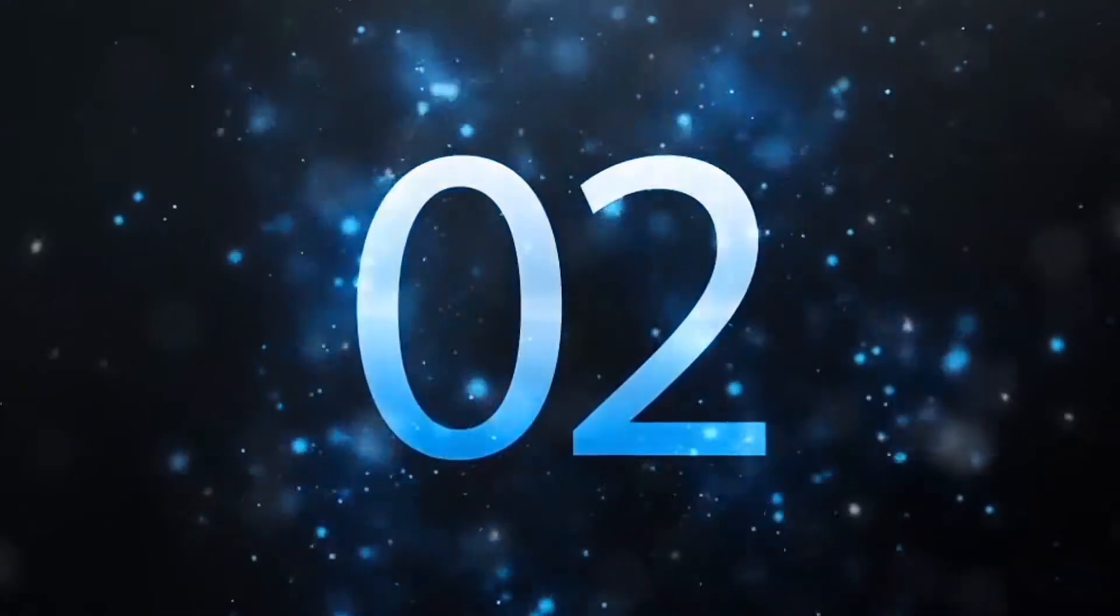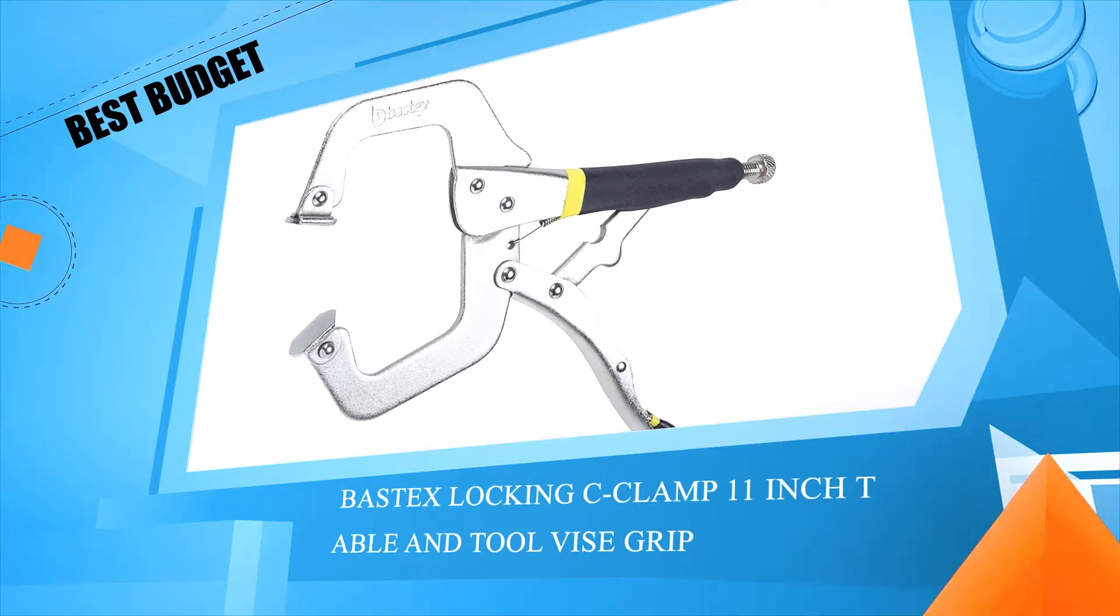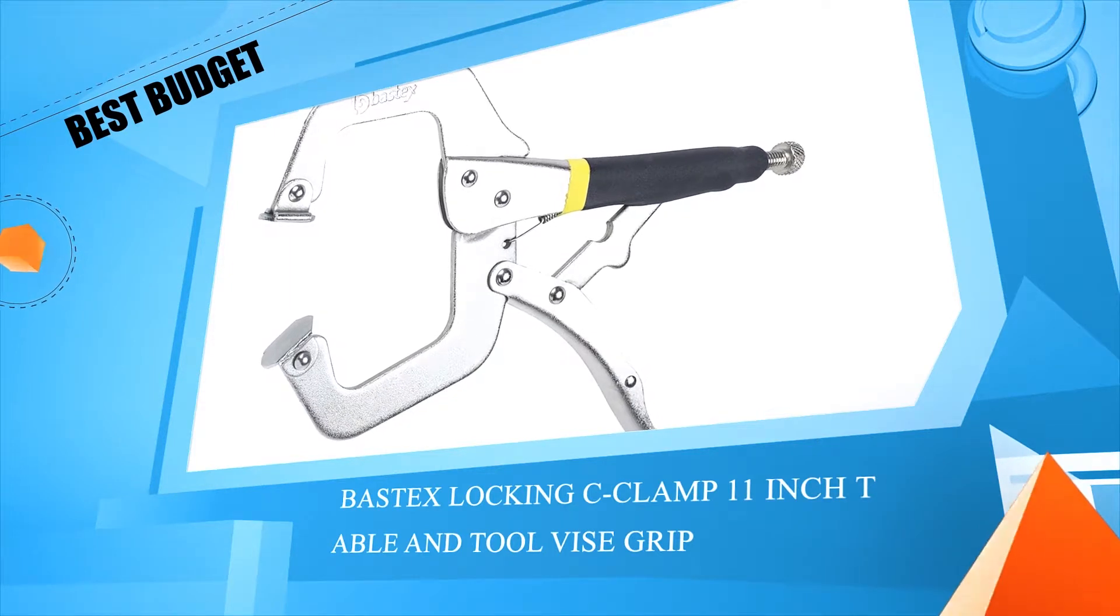Number 2. Bus text locking C-clamp 11 inches table and tool buys grip.